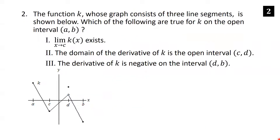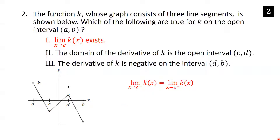The function k, whose graph consists of three line segments, is shown. Which of the following are true for k on the open interval (a, b)? First: the limit as x goes to c of k(x) exists. Looking at the graph, the limit from the left and the limit from the right as x approaches c are equal, so since both one-sided limits are the same, the limit does exist. So the first statement is true.